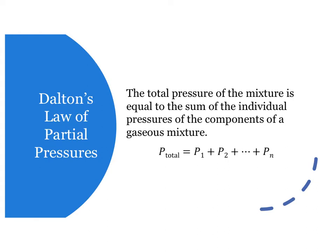The individual pressure, P1, P2, P3, of each component of a mixture is referred to as a partial pressure.